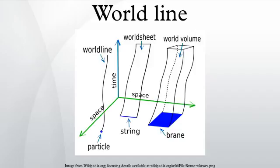Usage in physics: In physics, a world line of an object is the sequence of space-time events corresponding to the history of the object. A world line is a special type of curve in space-time.